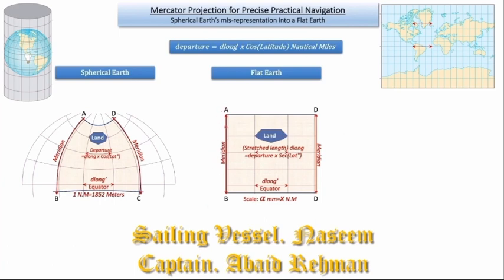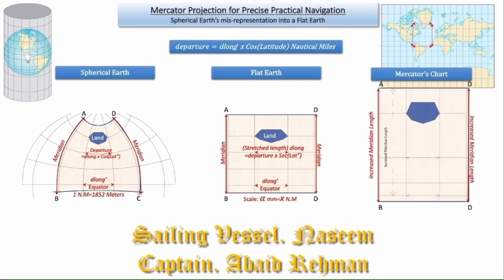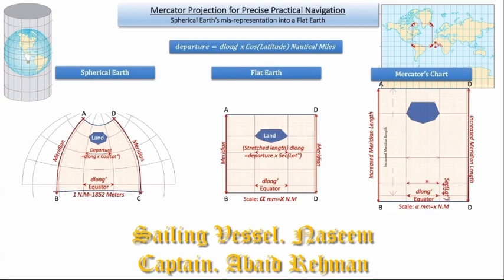Now, to render the land in its original shape, we use a Mercator chart where we stretch the meridians in the north-south direction. However, the stretch of the meridian is non-linear. On the equator it is zero stretch. As we move into the higher latitudes, the stretch will be equal to the secant of that latitude. At the same time, the meridian length will also be stretched by the secant of that latitude.